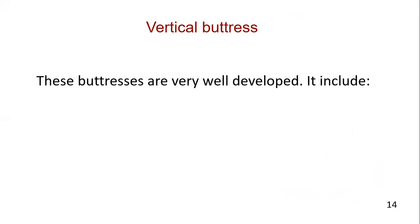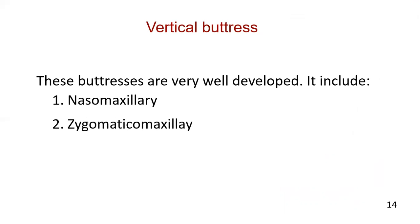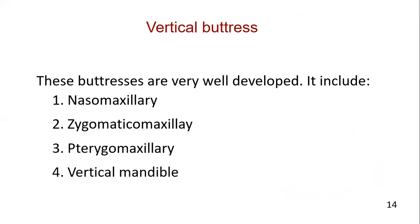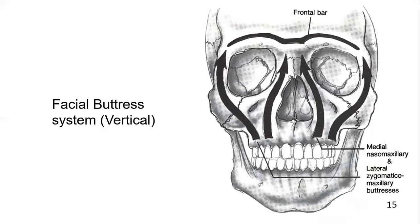The vertical buttresses are paired, present on both sides, and form the primary vertical support of the face. These are the nasomaxillary, zygomaxillary, and vertical mandible. On the medial side is the nasomaxillary buttress, and this one is the zygomaxillary buttress. As noted, these are paired, meaning they are present bilaterally on the opposite side as well.